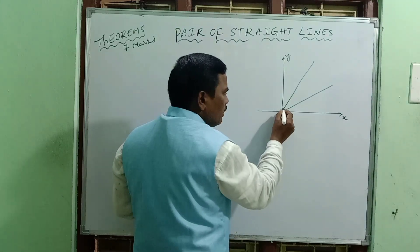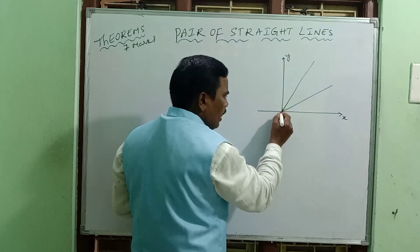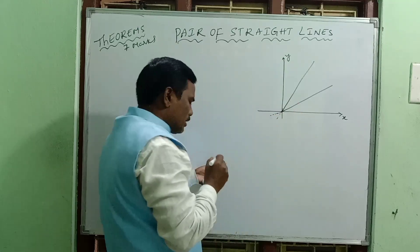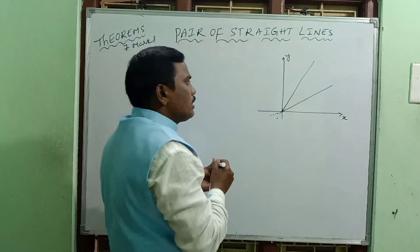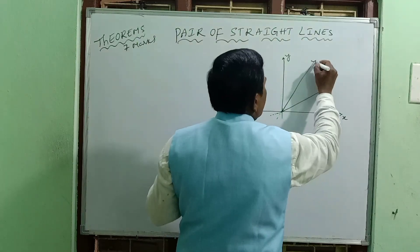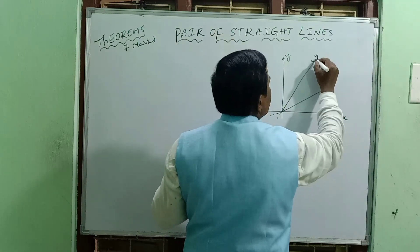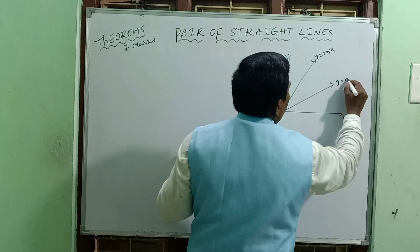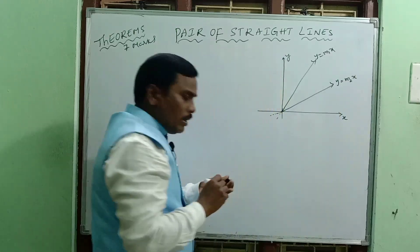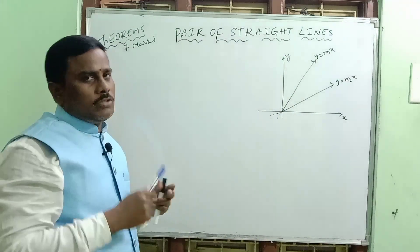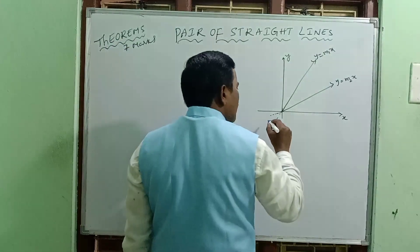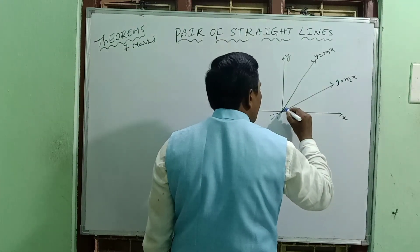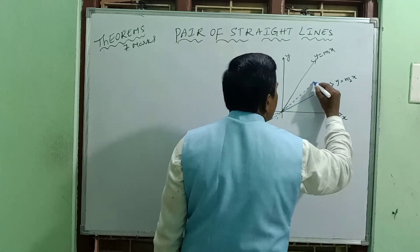We are passing through the origin. This is equation 1: y equal to m1x. This is equation 2: y equal to m2x. These two represent two lines passing through the origin. The other line is the angular bisector — the angle bisector of the two lines.